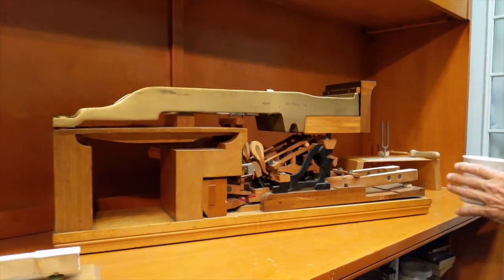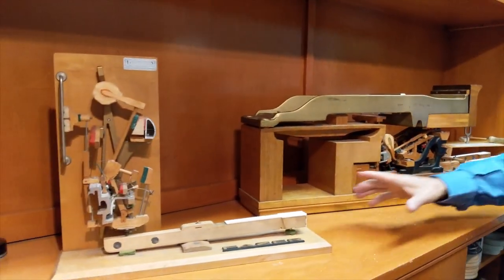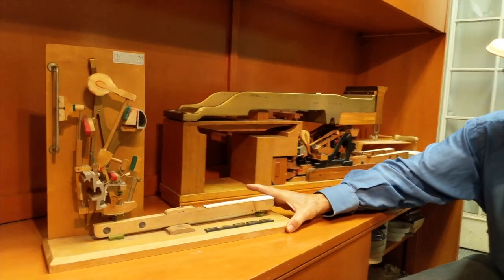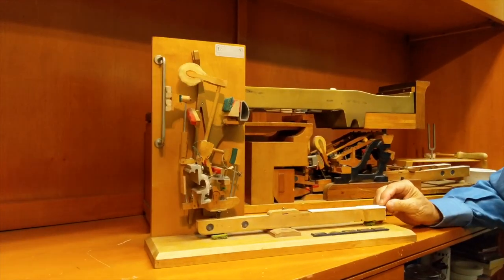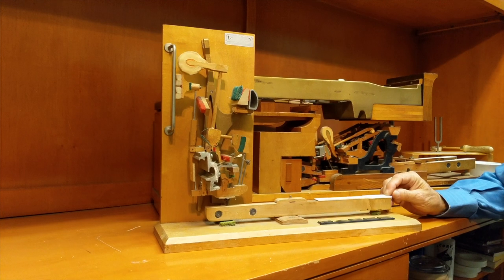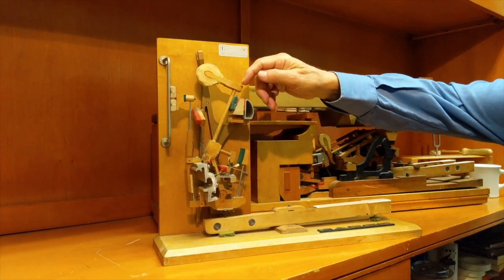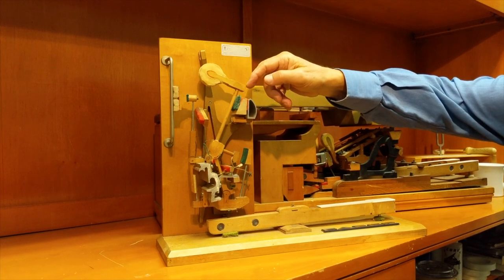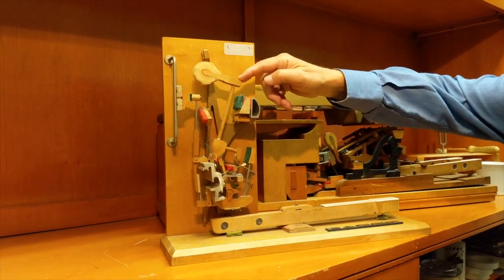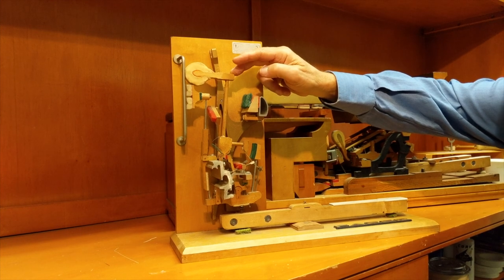Now let me pull over this little upright action. I'm going to pull it here toward me. Same amount of travel in the front of the key. You're still pressing about three eighths of an inch down. And the hammer is also going about the same amount. One and three quarters of an inch, one and seven eighths of an inch from rest to striking the string.